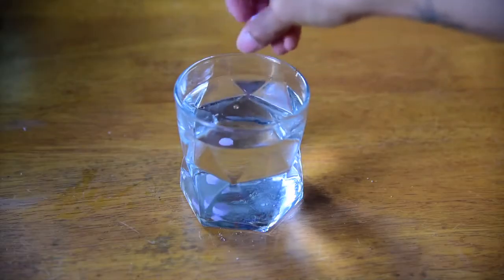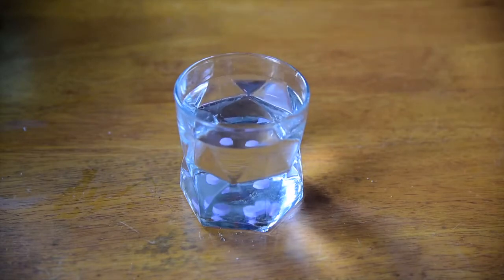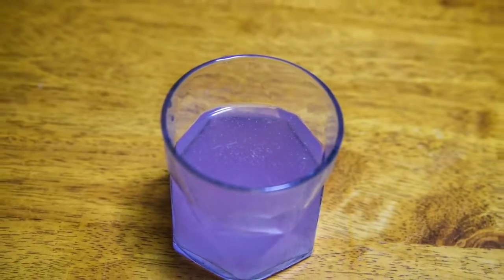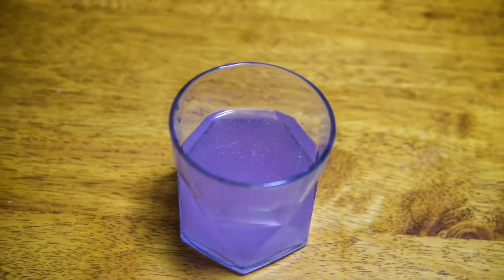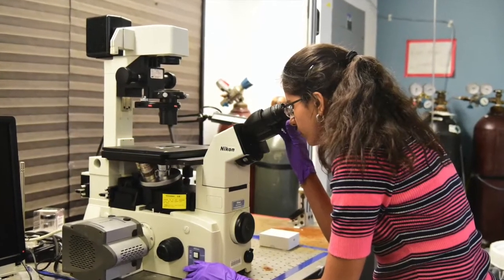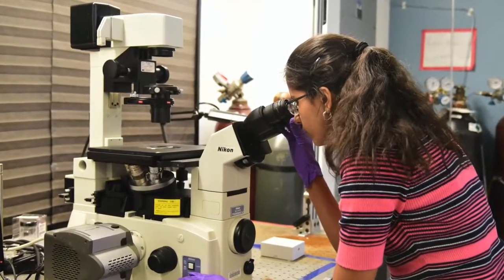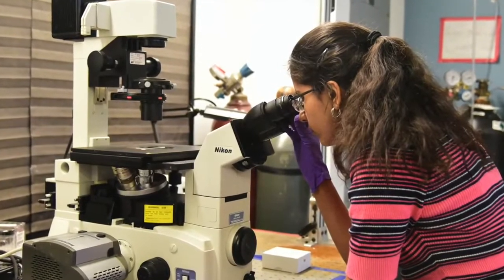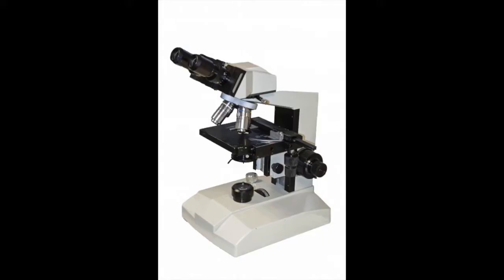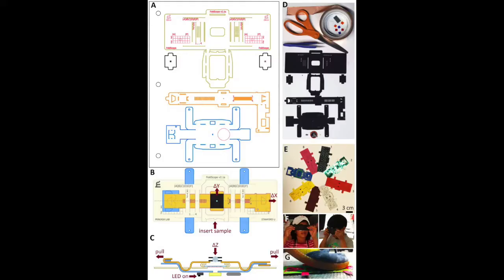You could also dissolve probiotic pills in water to create a test solution containing bacteria. Observe the test solution under a microscope to see if it has bacterial or other microbial contaminants. Benchtop microscopes or foldscopes could be used for studying the test solution.